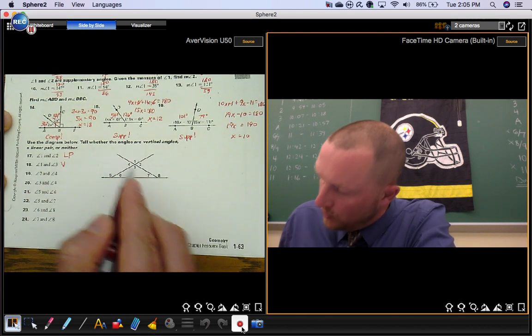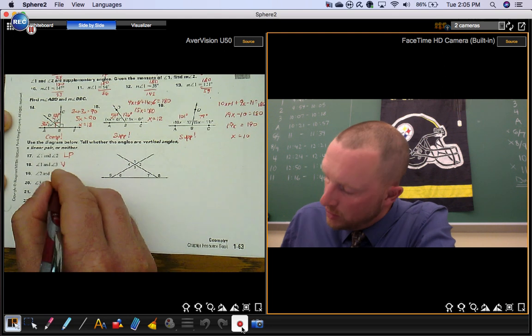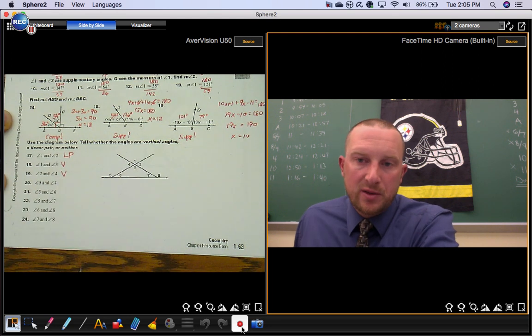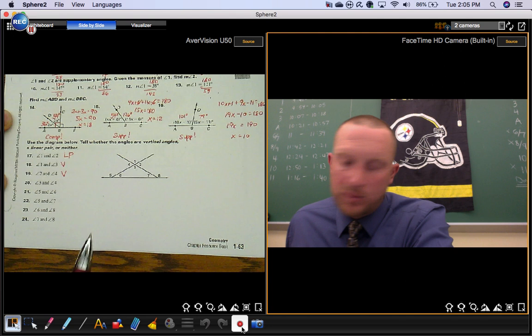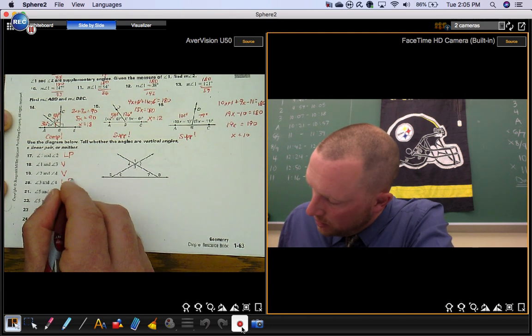Angles 1 and 3, those are vertical. Angles 2 and 4, those are vertical. They're across from each other. They're non-adjacent angles made with two lines. Angle 3 and angle 4 are a linear pair.